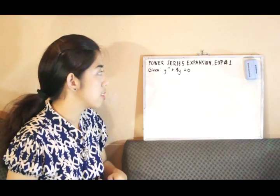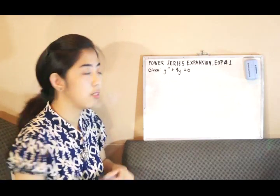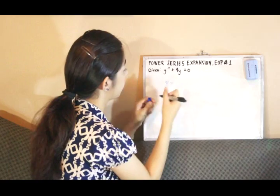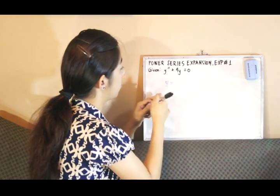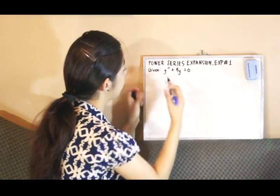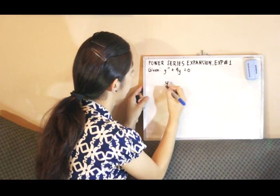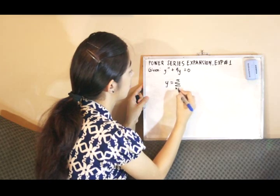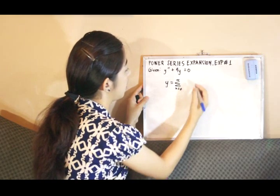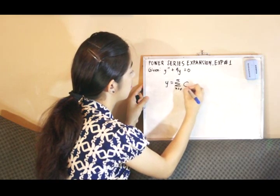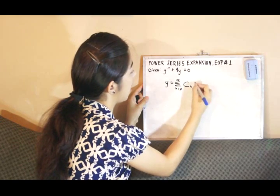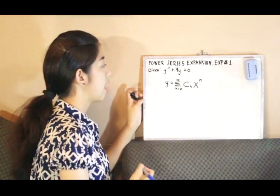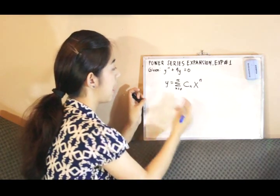In the power series, we have the generic form of y equals the summation of terms when n equals zero, c sub n, x raised to n. Deriving that,